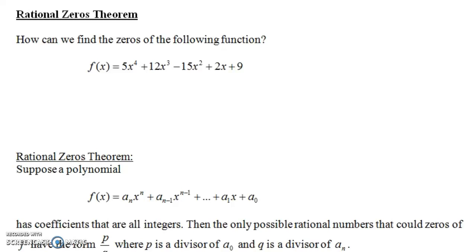In this video, we're going to talk about the rational zeros theorem. Let's begin with an example. How could we find the zeros of this function? Notice this is a polynomial, and notice all of the coefficients are whole numbers — they're integers. How could we find the zeros? Well, one way to do it would be to factor this function, but this looks like it'd be pretty hard to factor.